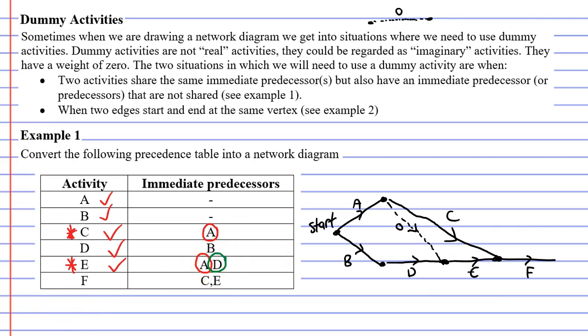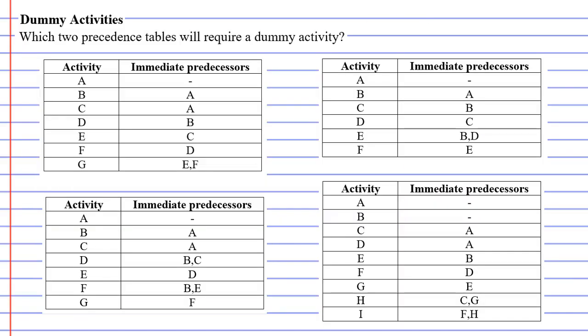So I'm going to do a little activity with you, but first of all, let's finish our network diagram here with a finish vertex. And here I have four precedence tables, two of which will require a dummy activity. So I'd like you to pause and try and figure out which two of these precedence tables will require a dummy activity. And then press play and I'll give you the solutions and I'll explain why.